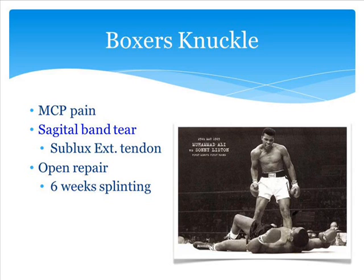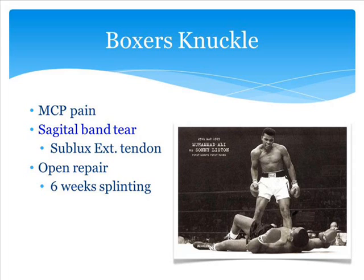For boxers — and MMA is becoming a more popular sport — with repetitive striking over the top of their knuckles, they'll get injuries to the sagittal band, which is the area over the top of the metacarpophalangeal joint that holds and centers the extensor tendon. With repetitive injury to the sagittal band, they can get attenuation or inflammation and ultimately the tendons can sublux. If the tendon slides to the side, the athlete may have trouble extending their finger because it's no longer at its mechanical advantage. In those cases, we typically splint them for a period of time to see if it will heal; if not, they may need surgery to repair the sagittal band.